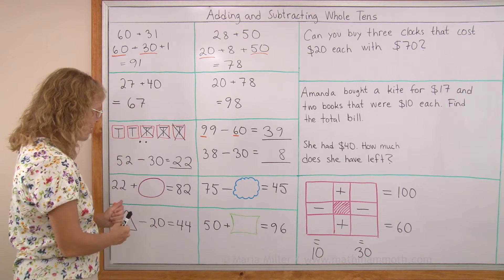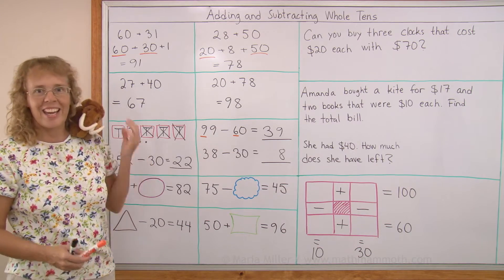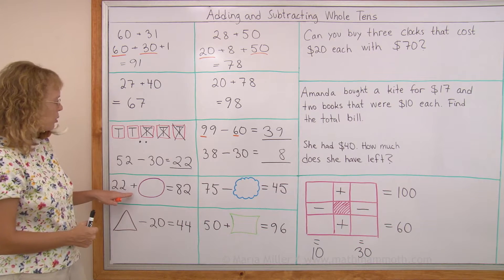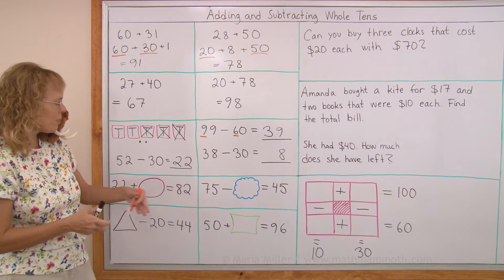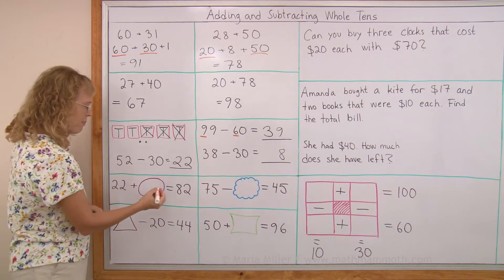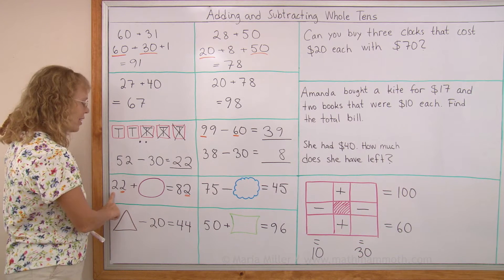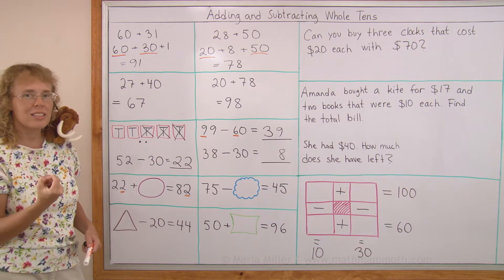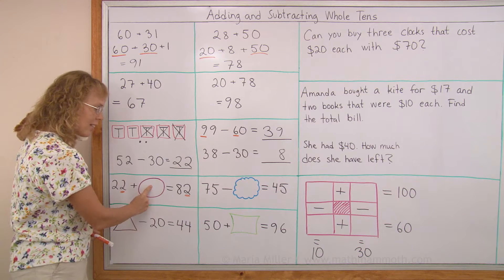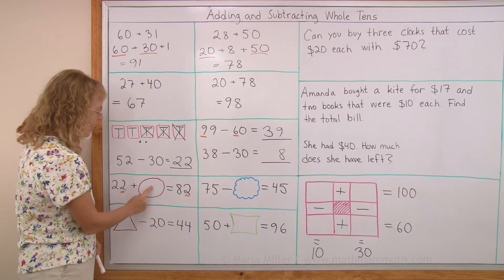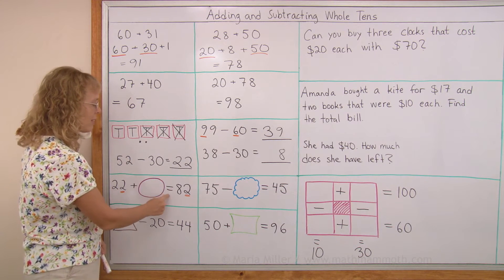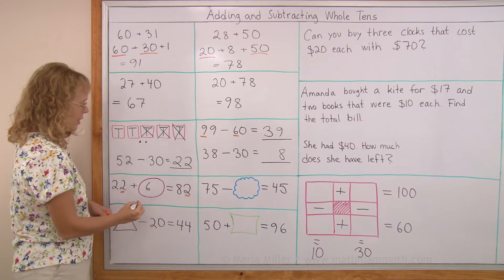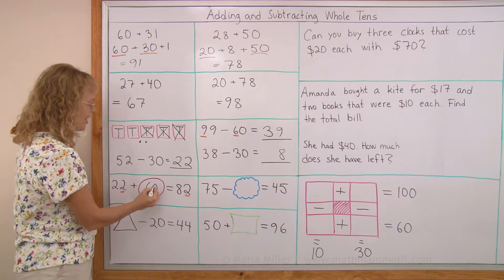Look Matty, we get to do puzzles again — puzzle problems! I hope you like this too. 22 plus how many more makes 82? Notice there's 2 and 2, which means we are adding no ones, so we must be adding whole tens here. 22 means we have 2 whole tens, and so many whole tens makes 8 tens. So it's like 2 plus how many more makes 8. I need to write 6 tens: 60.